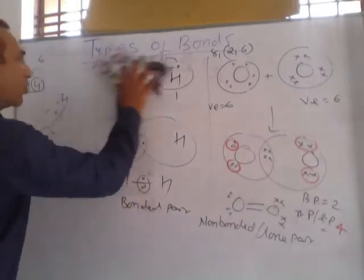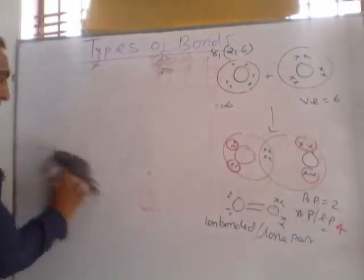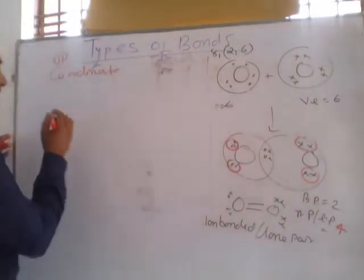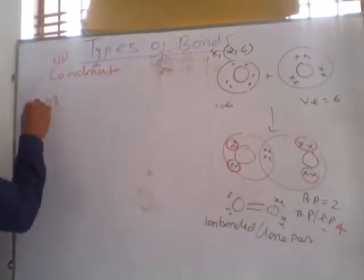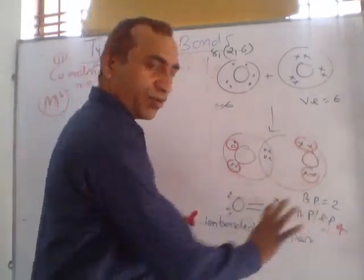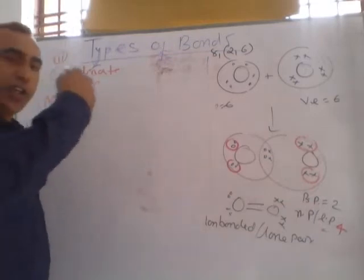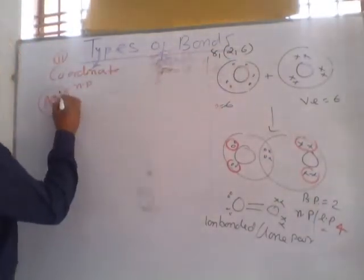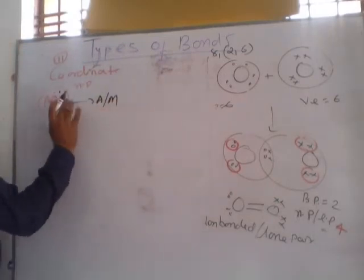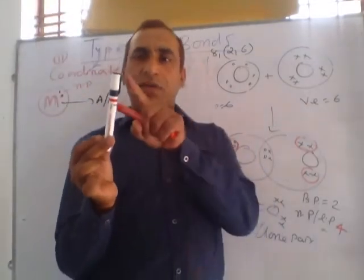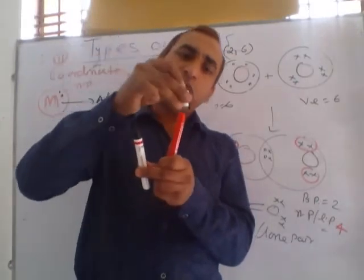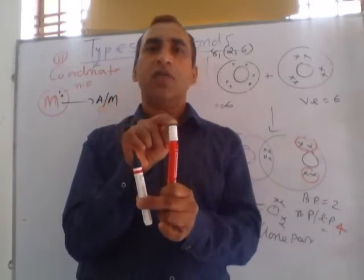The last type is coordinate bond. Coordinate bond means: this is molecule M, and in this molecule there are some non-bonded pairs (NP). If any molecule completely donates — donation means completely donating its non-bonded pair to another atom or another molecule — the non-bonded pairs are completely donated. This bond is called coordinate bond.